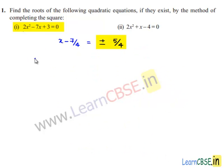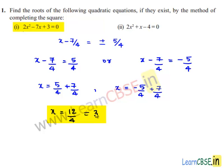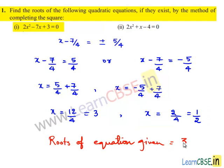So x minus 7/4 is equal to plus or minus 5/4. Taking the positive case: x minus 7/4 equals plus 5/4, or taking the negative case: x minus 7/4 equals minus 5/4. So x is equal to 5/4 plus 7/4 which gives 12/4 equals 3, or x equals minus 5/4 plus 7/4 which gives 2/4 equals 1/2. Therefore the required roots of the given equation are 3 and 1/2.